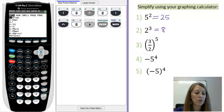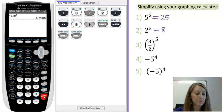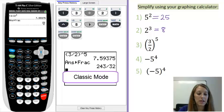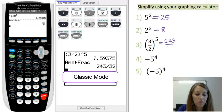And then option number 1 converts your last sequence into a fraction. So, you can either push 1, or since 1 is already highlighted, you can push enter. So, it changes our last answer back to a fraction. And you can see that this simplifies to be 243 over 32.